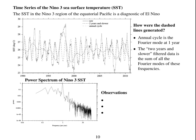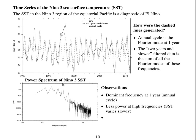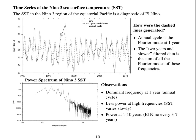Here's the power spectrum. Again there is a dominant peak at one year from the annual cycle. In comparison to the rainfall data, there is very little power at high frequencies, because sea surface temperature varies slowly from day to day. El Niño occurs every three to seven years, suggesting there should be elevated power in the one-to-ten year frequency range, though this is not entirely clear from the power spectrum.